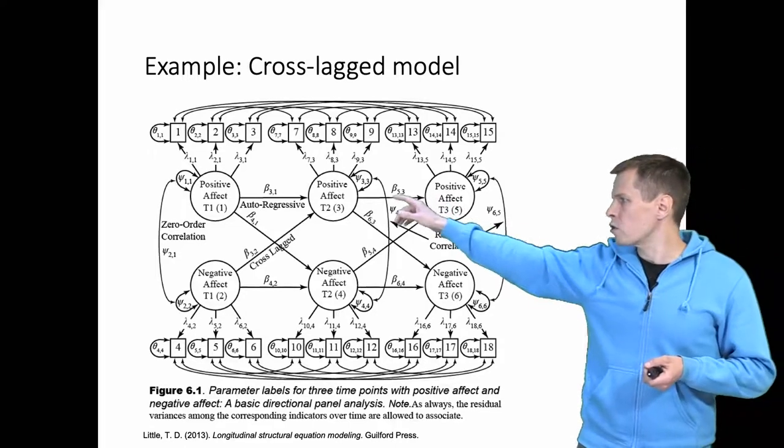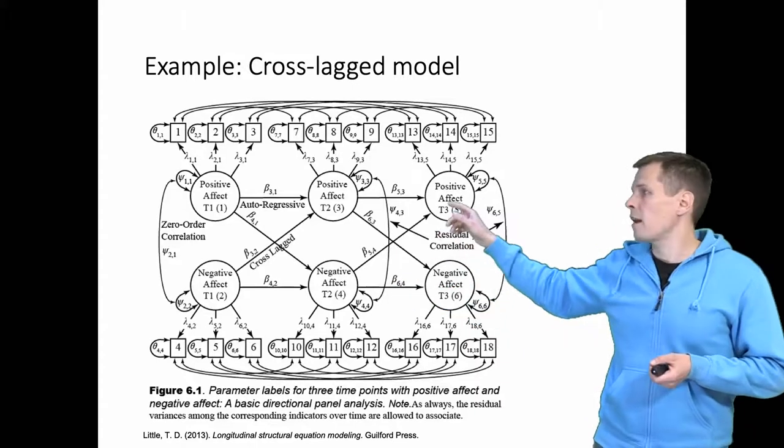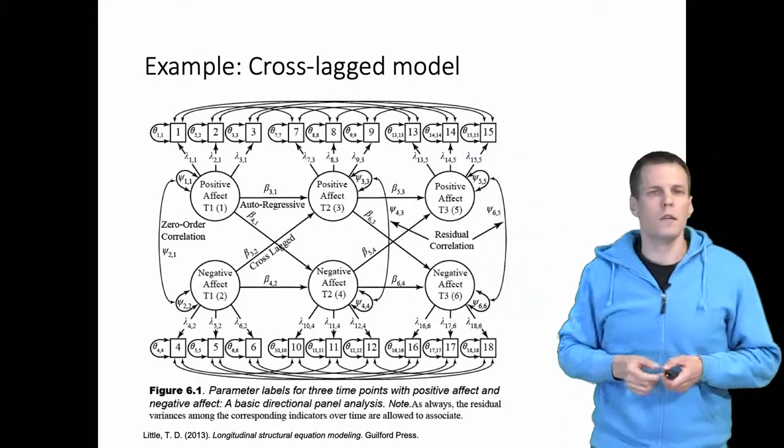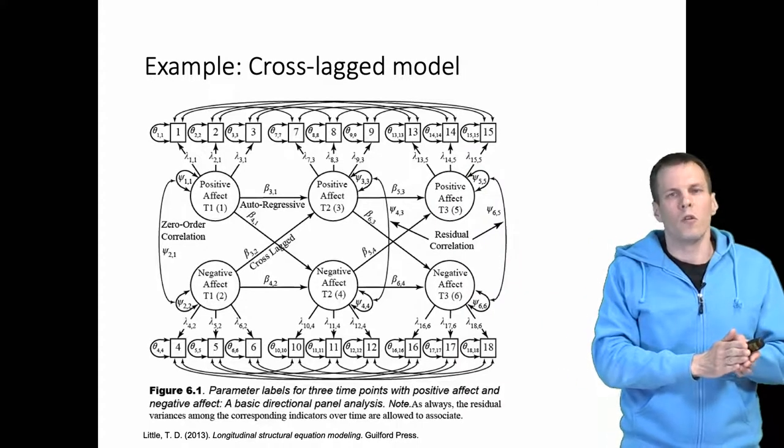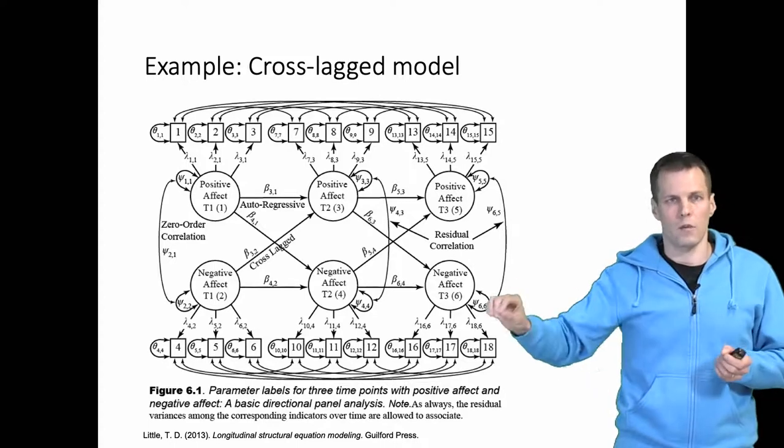We have the autoregressive terms here, the paths here, and the cross-lagged paths here. And we can see that the errors are allowed to be correlated so that the first indicator correlates always with the first indicator at different time points.